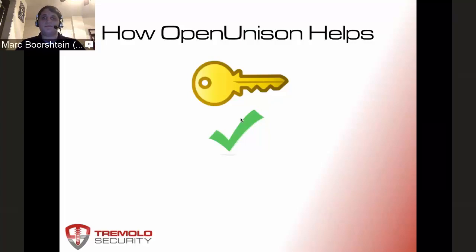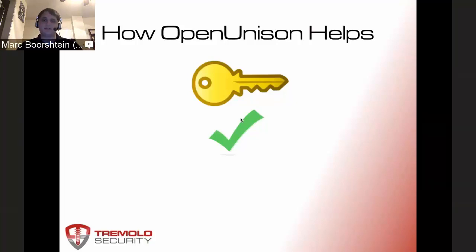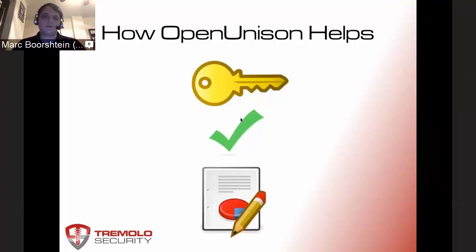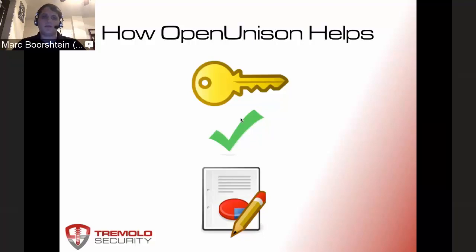We've also recently added Kerberos constrained delegation. So if you have an app set up to only support Kerberos, we can generate a Kerberos ticket using protocol transition and allow you to do SSO without any component integration. For authorizations, we have directory groups, dynamic groups, filters, and a custom authorization mechanism — the ability to write a rule requiring logic in your authorization path. We've built supervisor authorizations as a custom authorization. We allow reporting via a simple relational database with a published schema, so you can use any reporting or business intelligence system — customers are using Jasper Reports.